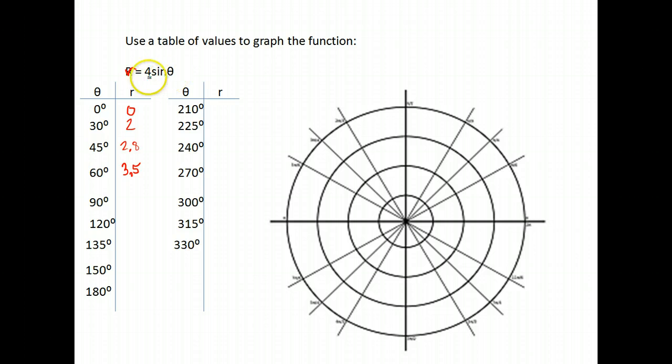90, the sine of 90 is 1 times 4 is 4. 120, the sine of 120.